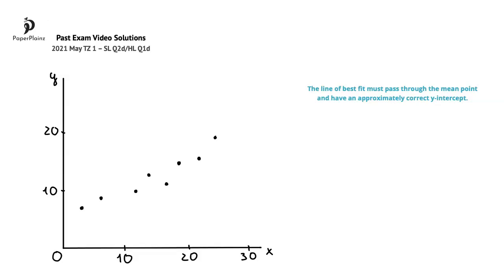We found in the previous question part that the mean of the x values is 15 and that the mean of the y values is 11. Therefore, we can plot the mean point approximately here.